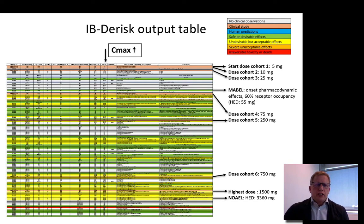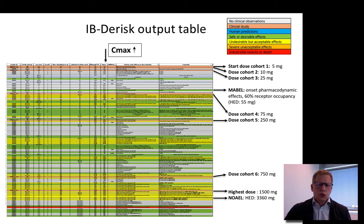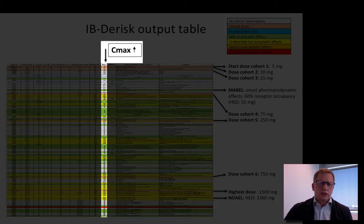Once you have exported the data into an Excel file, and after some modifications, it may look like this. Each row represents and contains information from a single pre-clinical study. And it is important to realize that all rows are sorted on the C-Max. This is based on the fact that the volume of distribution is one of the more reliable allometric scaling factors available.